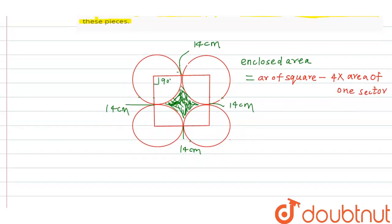Now area of a square is side squared, so enclosed area is equal to 14 into 14